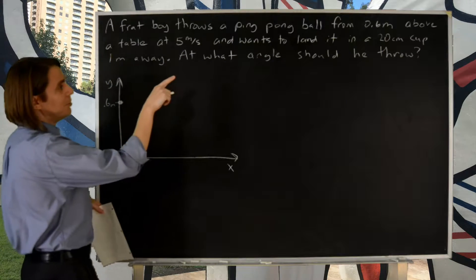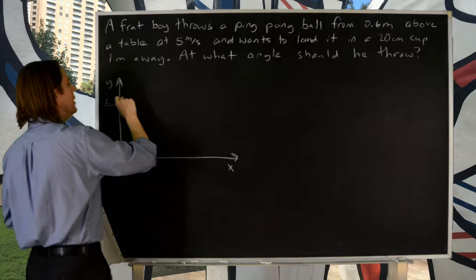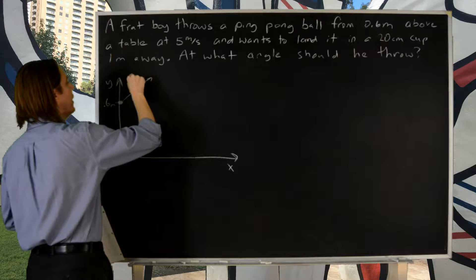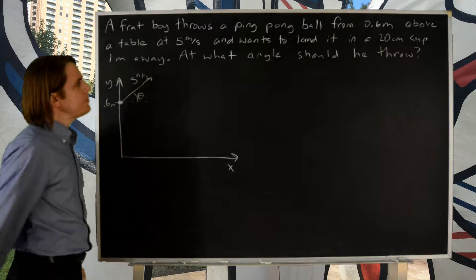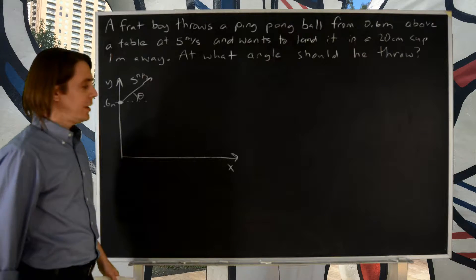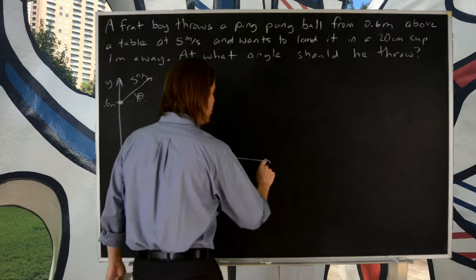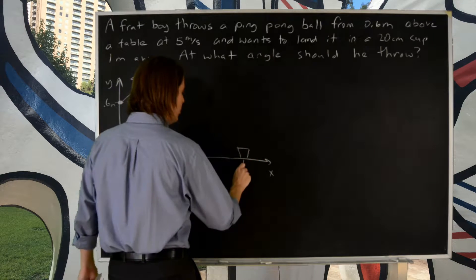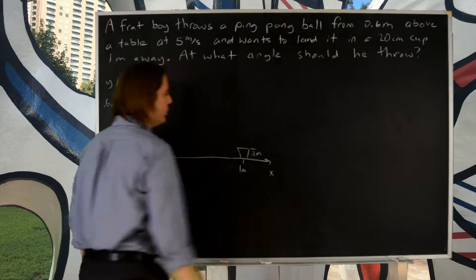So the ping pong ball starts there and throws hard - 5 meters per second, but at an unknown angle. We're trying to find the angle that we need to throw at, 5 meters per second at some theta, and he's trying to land in a cup that we know is 1 meter away. Here's the cup at 1 meter, and again we know it's 0.2 meters tall, a 20 centimeter cup.